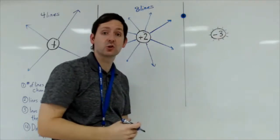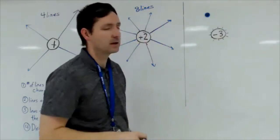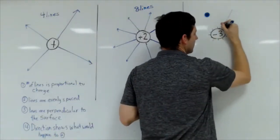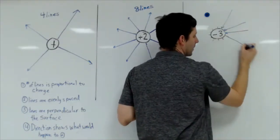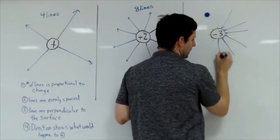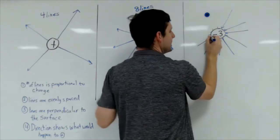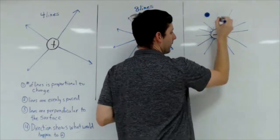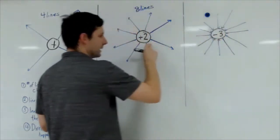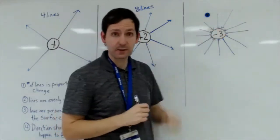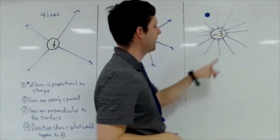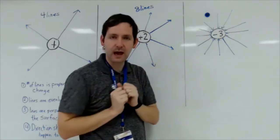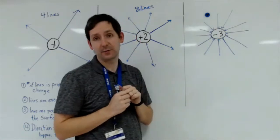The last step is direction. What would happen to a positive charge placed near a negative? It would be drawn towards the negative. So the arrows point inward — coming in toward the charge. With twelve lines it's even more dense than the positive two, so I expect a stronger field close to the center. Lines are evenly spaced, as perpendicular as I can make them, and all pointing inward.